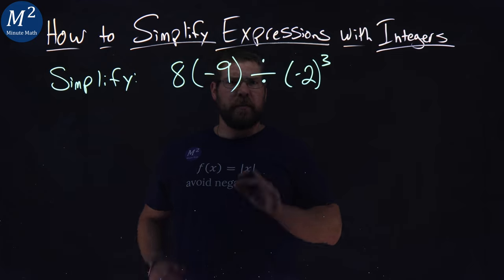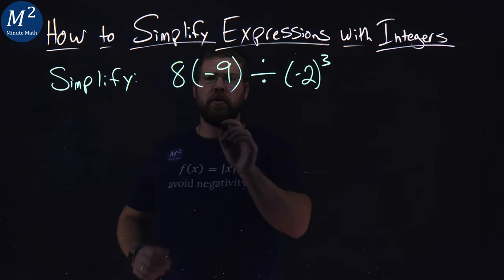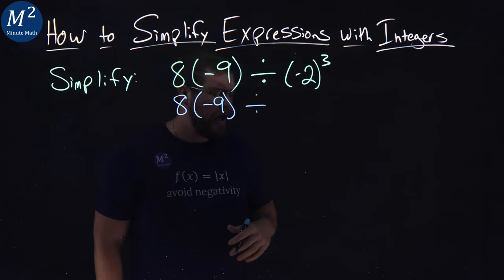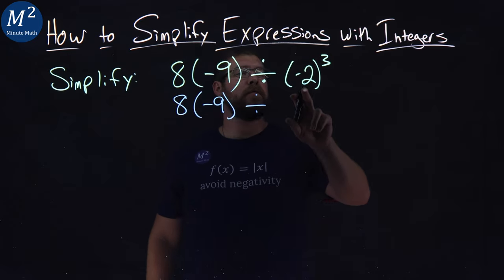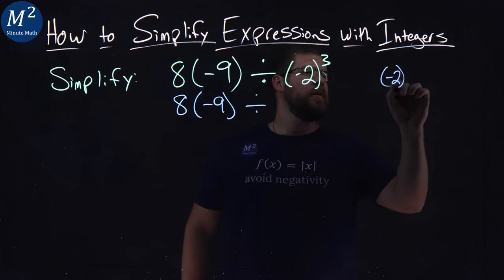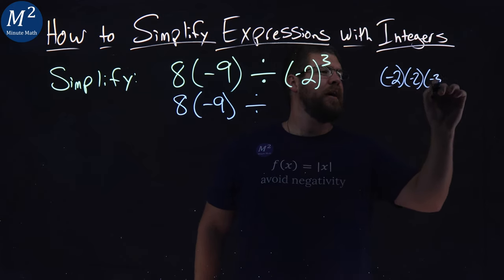Let's deal with our exponents first. I'm going to take each part very slowly here. We have 8 here, negative 9 divided by... Exponent comes first. So remember, negative 2 in parentheses to the third power means we multiply that negative 2 times itself three times.